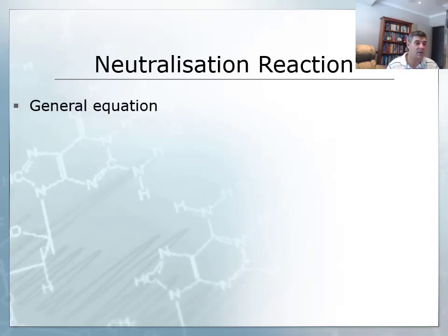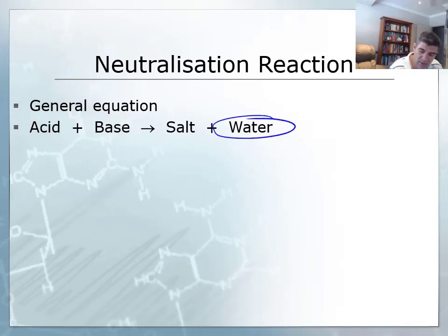So the first thing that we need to do is look at the general equation. In general, the equation for a neutralization reaction is an acid plus a base produces a salt plus water, and it's the water that is the product that tells us that it's a neutralization reaction. So if we have substances that are not pH neutral, but we produce water, then that's an example of a neutralization reaction.